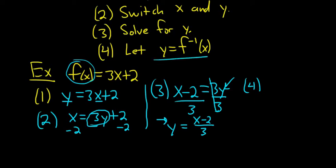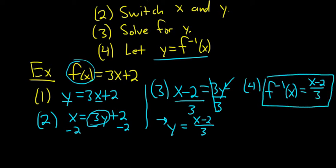And then step four is simply to replace y with f inverse of x. So f inverse of x, that's how you read it, is equal to x minus 2 over 3. And that is the inverse of our function.